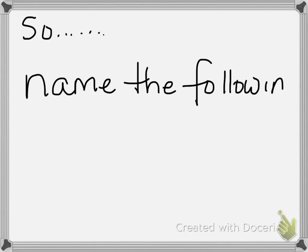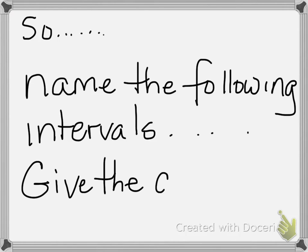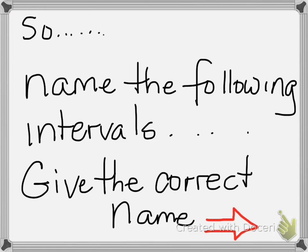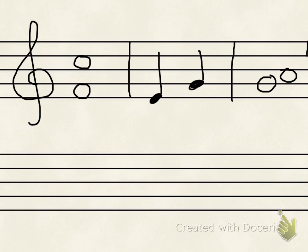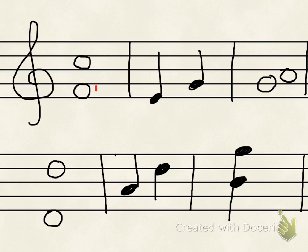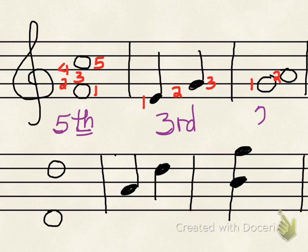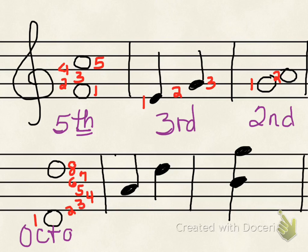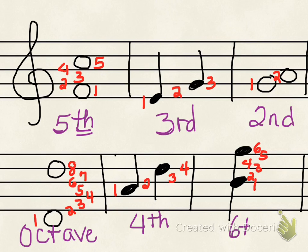Let's name the following intervals — make sure you give them the correct name, not just the number. The first one is a fifth. The second one is a third. The third one is a second. The fourth one is an octave. The fifth one is a fourth. And the sixth one is a sixth. Always count the lines and spaces, whether the notes are stacked on top of each other or sitting side by side.